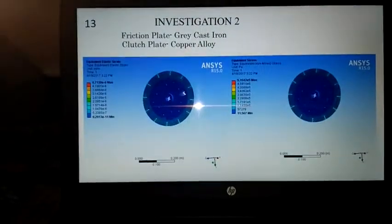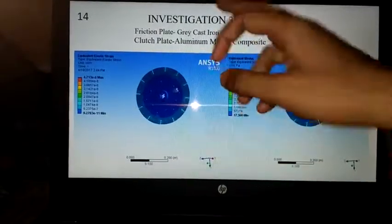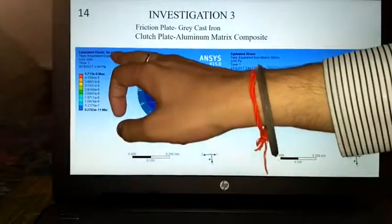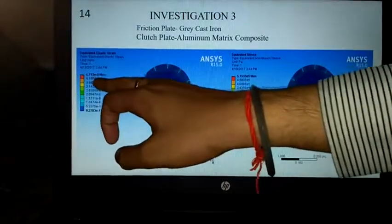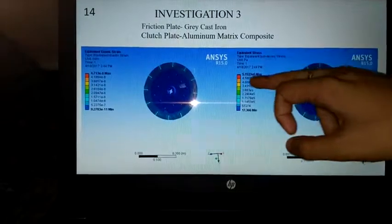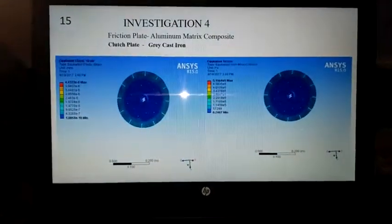Investigation 3: friction plate is grey cast iron and clutch plate is aluminum matrix composite. Maximum elastic strain is 4.713e-6 and maximum equivalent stress is 5.1533e5.